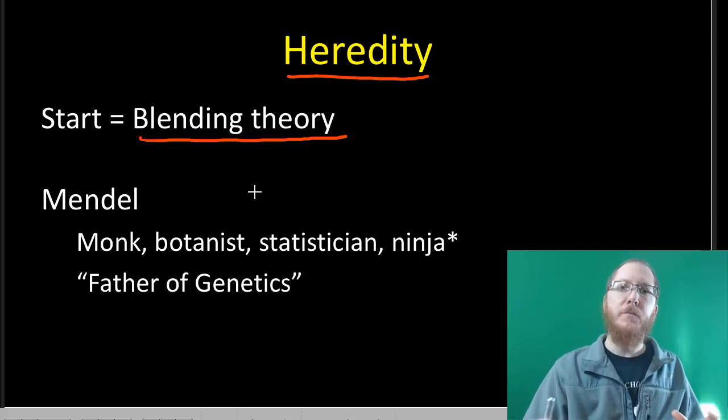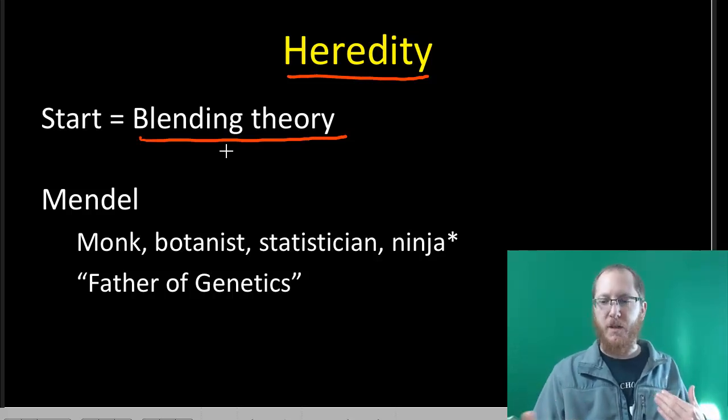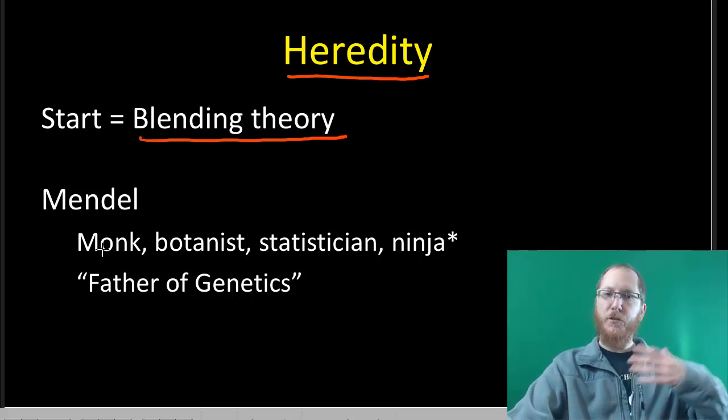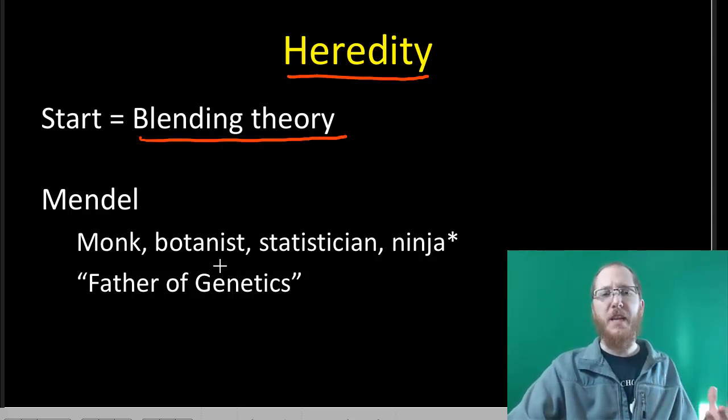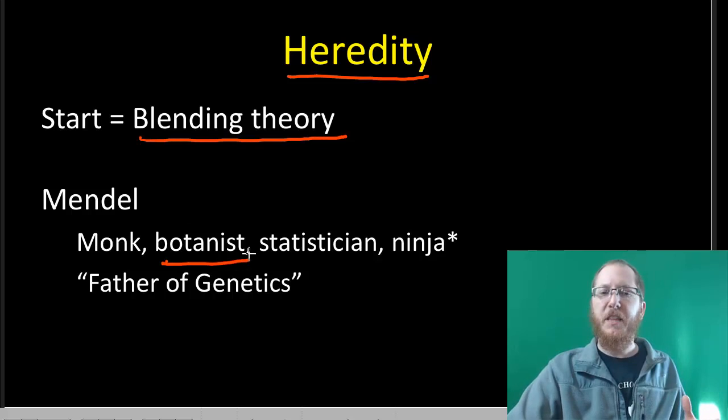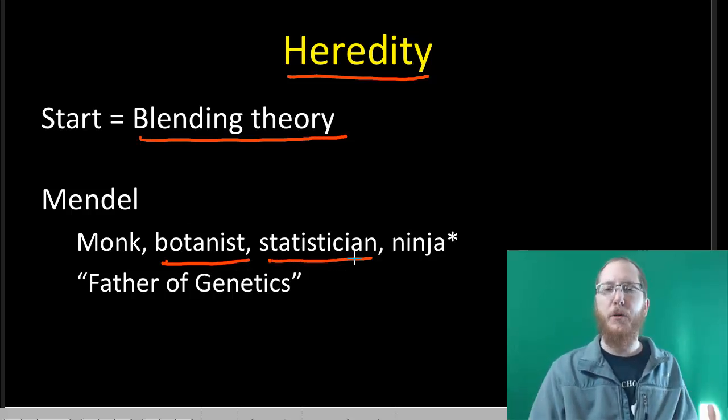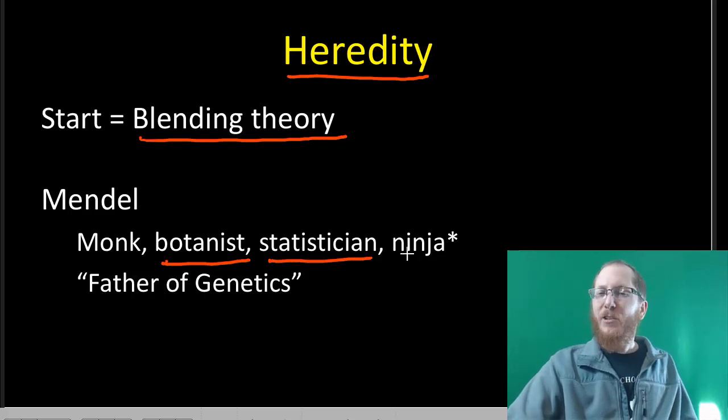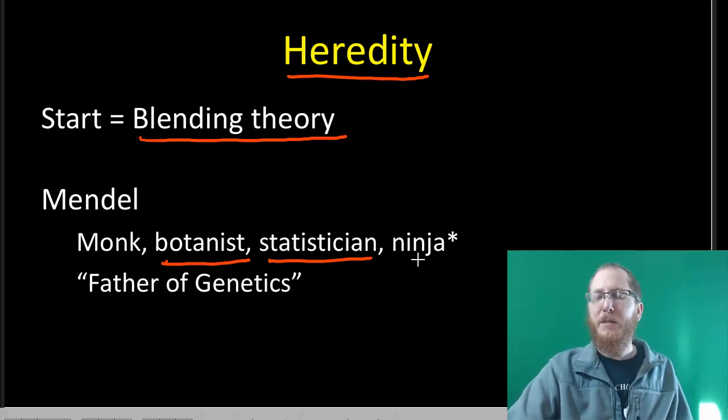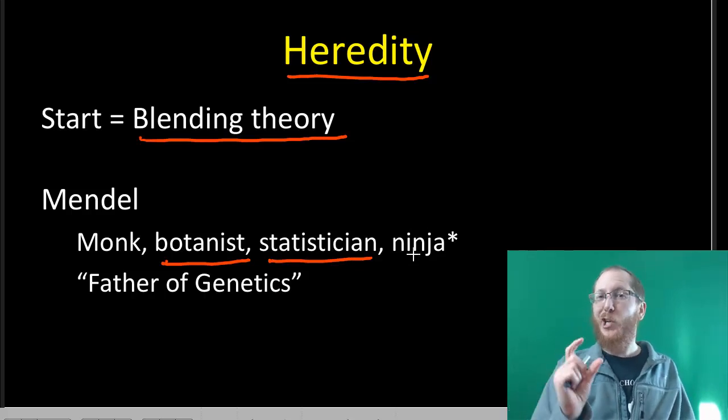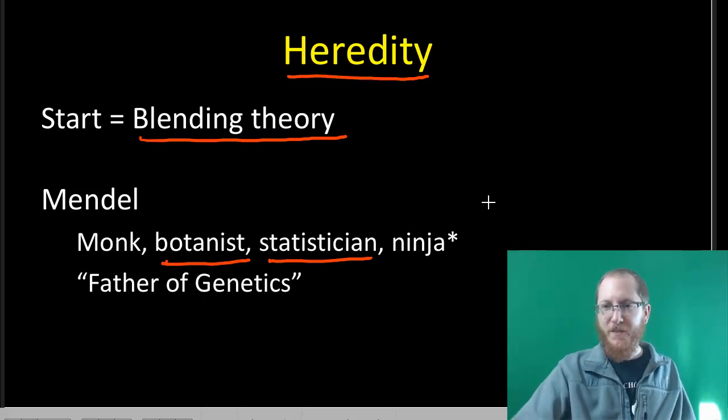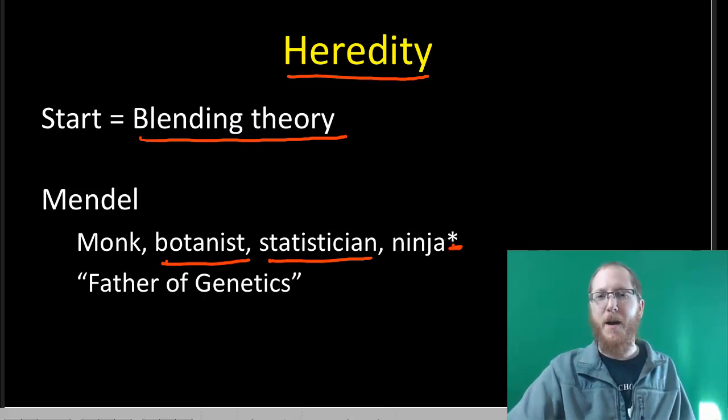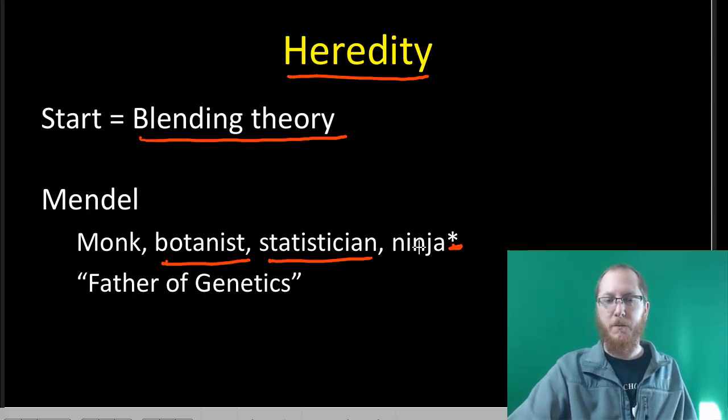He had some skills that helped him address this. He was a monk, which allowed for him to be educated, so he was able to go to the university. While in the university, he really liked science, specifically plants, and he really liked math, specifically statistics and probability. I don't know that I've read anywhere he was a ninja, but I think that just means he's a really good ninja, because we don't know he was one. We'll leave that there with an asterisk.